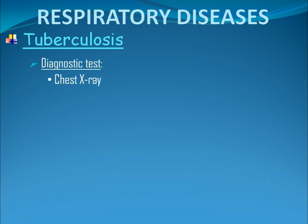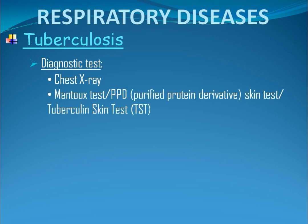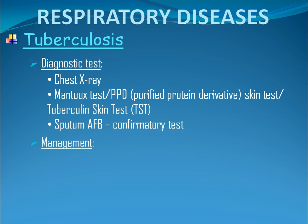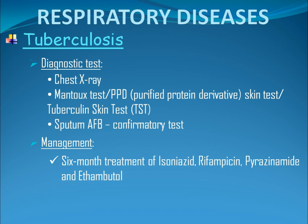Diagnostic tests: Chest x-ray. Mantoux test, or PPD skin test, or tuberculin skin test — these are all the same. It is done by injecting 0.1 ml of tuberculin purified protein derivative into the inner surface of the forearm via intradermal, using a tuberculin syringe with the bevel of the needle facing upward. The result should be determined 48 to 72 hours after the procedure. Lastly, sputum AFB — this is the confirmatory test to detect the presence of Mycobacterium tuberculosis. Management: six-month treatment of isoniazid, rifampicin, pyrazinamide, and ethambutol — all taken before meals — and streptomycin.